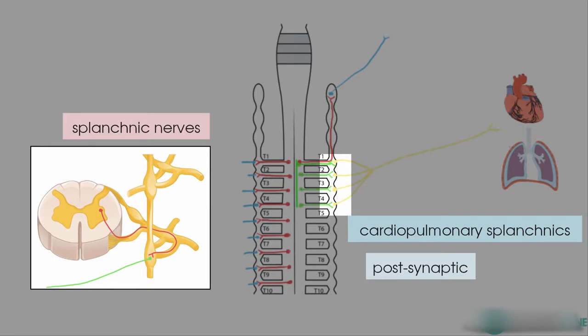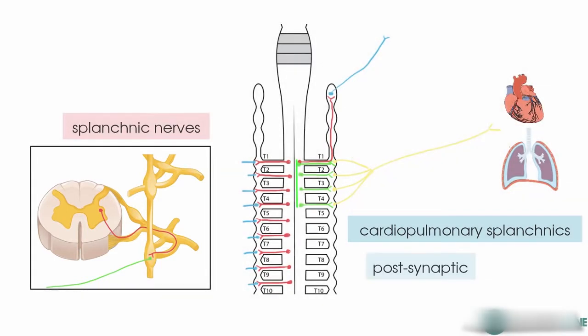We will see in a moment how the abdominopelvic splanchnic nerves are pre-ganglionic. These cardiopulmonary postsynaptic sympathetic fibres project by these splanchnic nerves to various plexuses and are then distributed to innervate their target organs. So you've got cardiac, pulmonary, and esophageal plexuses.